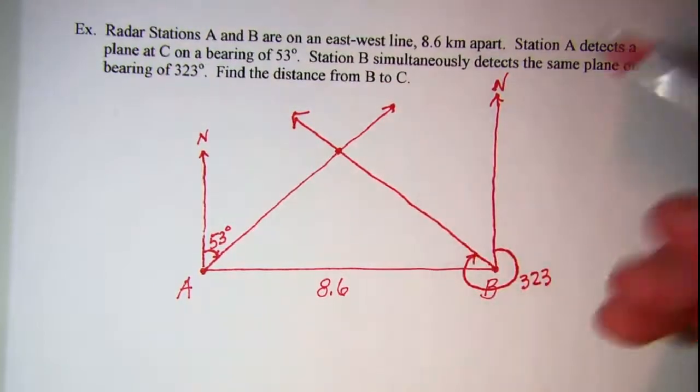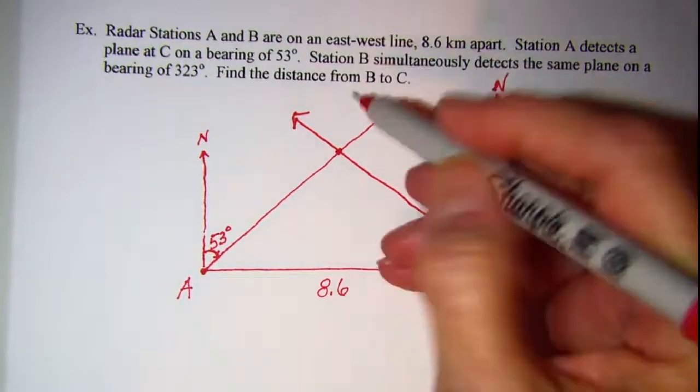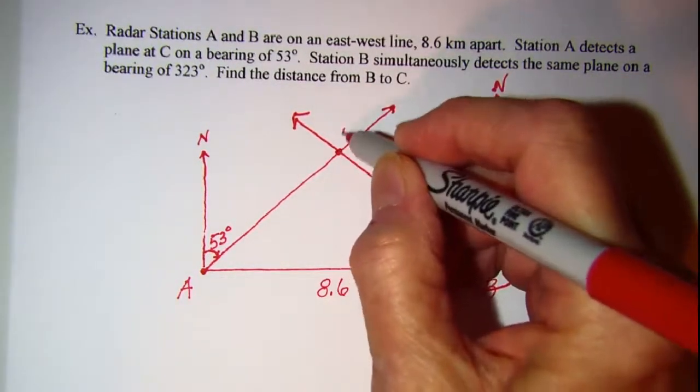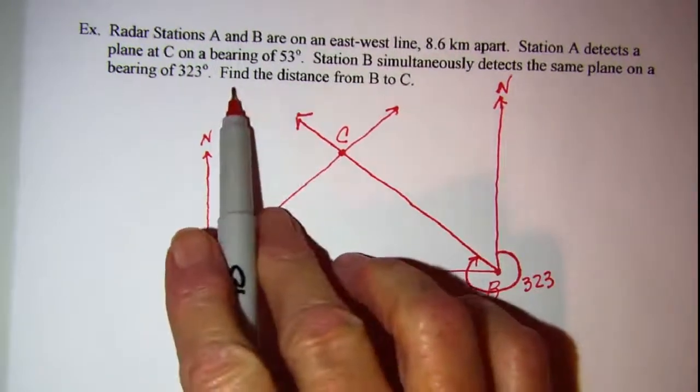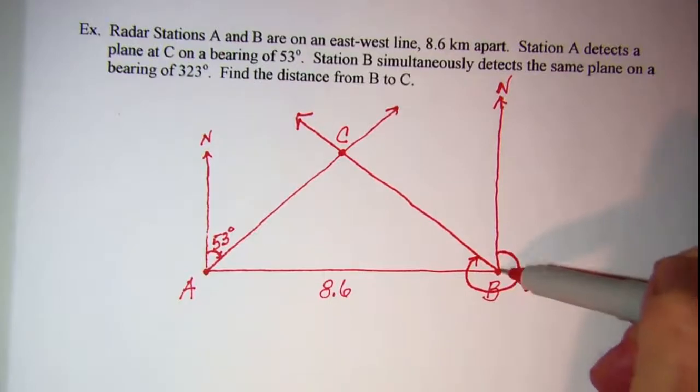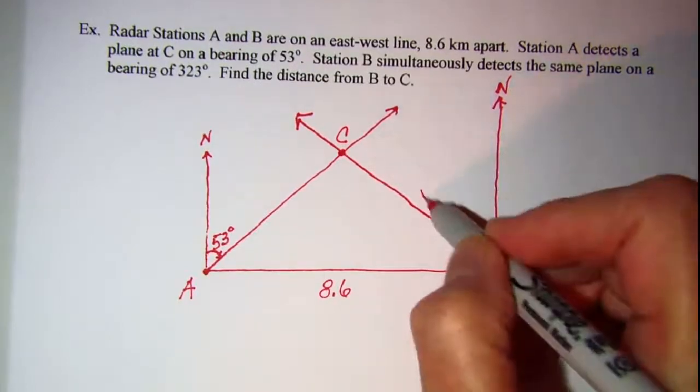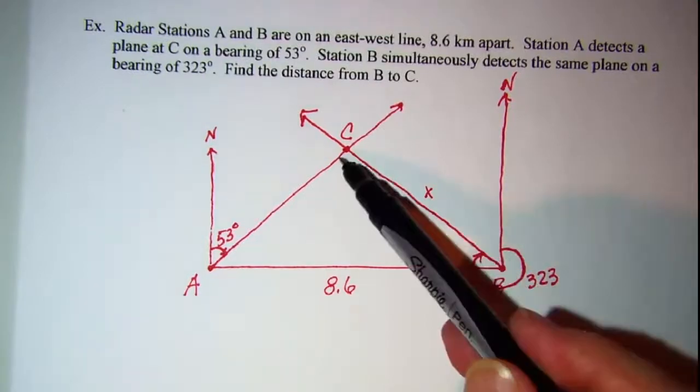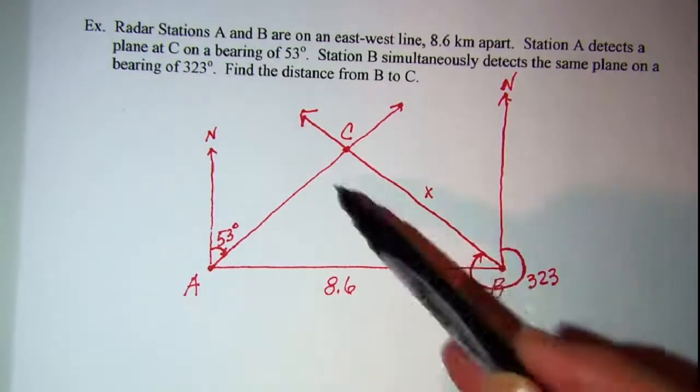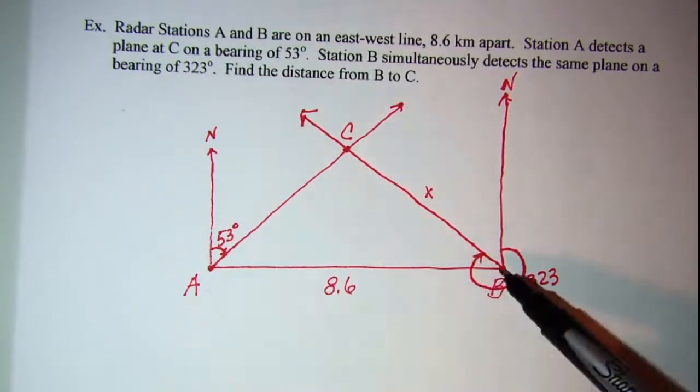Now our question, the plane is at point C, so that means this point is called C, and our question is to find the distance from B to C, so we can call this X. Now we see a triangle here, we don't know if it's a right triangle, but we'll soon find out.